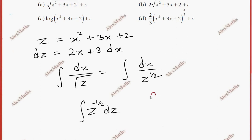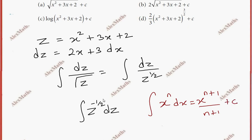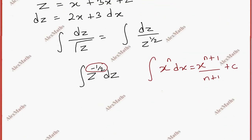Using the basic integration formula: integral of x power n dx equals x power n plus 1 by n plus 1 plus c. Applying the same here, this is z power n plus 1 by n plus 1 plus c.